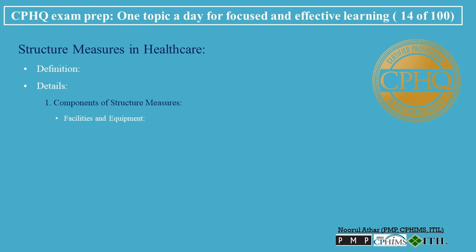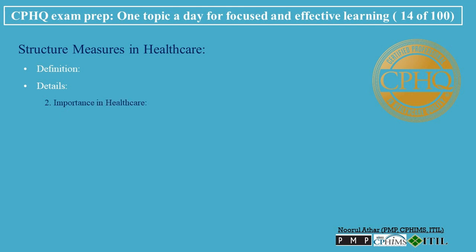Components of Structure Measures: Facilities and Equipment — the adequacy and condition of physical facilities and the availability of necessary medical equipment and technology. Staffing — measures related to healthcare personnel, such as nurse-to-patient ratios or staffing levels in various departments. Qualifications of Healthcare Providers — the training, certification, and qualifications of healthcare professionals, including the percentage of board-certified clinicians. Financial Resources — the availability of operational funds and resources for patient care and facility maintenance.